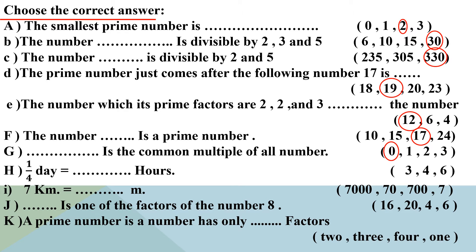Letter H: a quarter of a day equals how many hours? Let's remember — 1 day equals 24 hours. So we want a quarter of a day. We divide: 24 ÷ 4 = 6. So make a circle around 6.